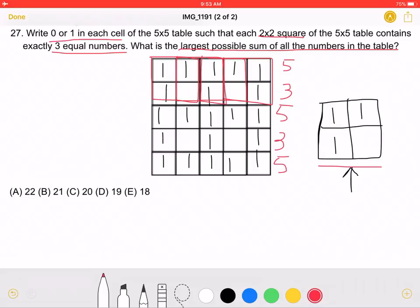If we add all these numbers together, we will have a total of 21, which means that the largest possible sum is answer choice B, 21.